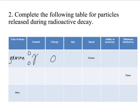Sometimes you'll put a 0 up here for no mass and a 0 down here for no charge. And so gamma has no charge, gamma has no size, because it's not really matter. Gamma is electromagnetic energy. It has fastest speed, it has a very high ability to penetrate, and it is blocked by lead.